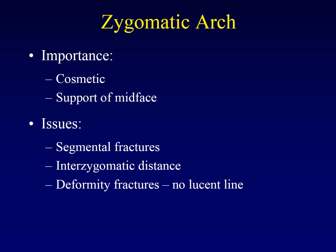Zygomatic arch fractures are prone to deformity fractures — what we call greenstick fractures in children. Even in adults, the zygomatic arch may fracture without showing a discrete lucent line, and instead just show deformity of the normal zygomatic arch curvature. In this case, symmetry is your friend. Look at the degree of curvature of the contralateral zygomatic arch and see if you can identify a deformity on the affected side.